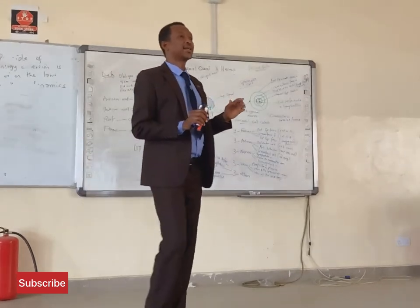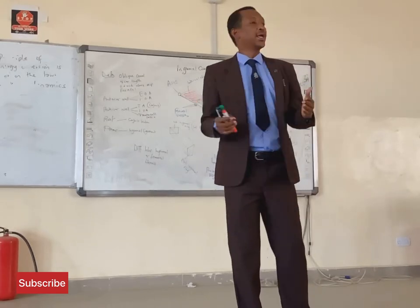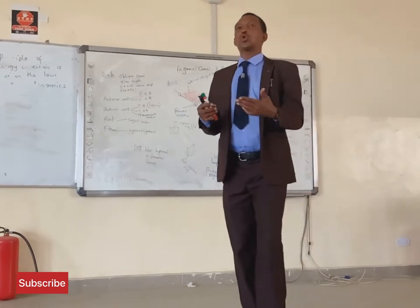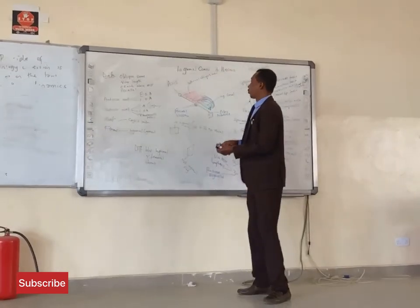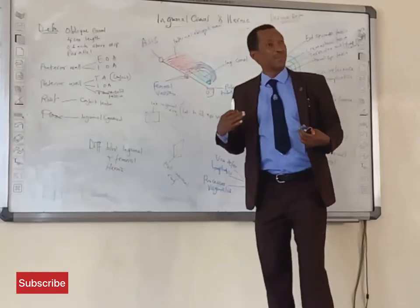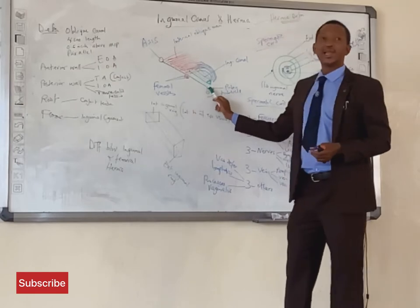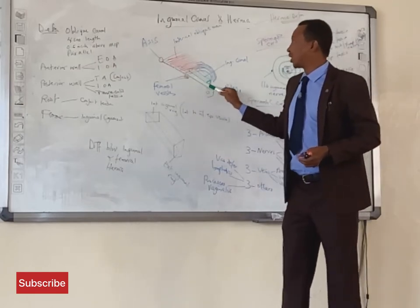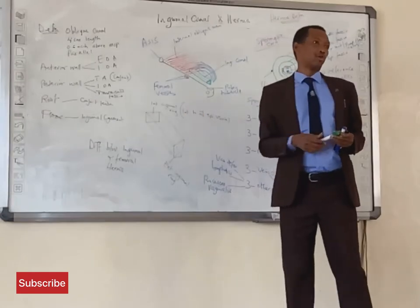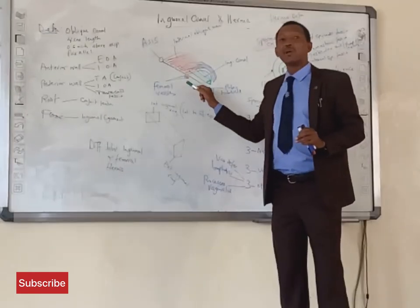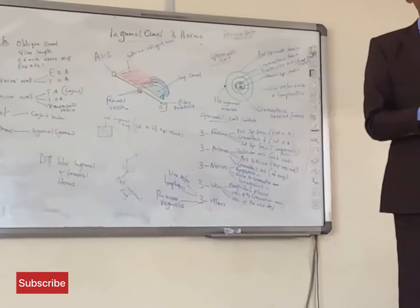During the last lecture we said the external oblique muscle of the abdomen, towards its insertion, ends into a flattened tendon called the aponeurosis. Similarly the internal oblique and transversus abdominis also do so. The inferior border of the external oblique muscle reflects inward to form what we call the inguinal ligament. That inguinal ligament is nothing but the rolled-in fibers of the aponeurosis of the external oblique muscle. The inguinal ligament is actually a misnomer — it is not really a ligament but rather the lower edge of the aponeurosis.